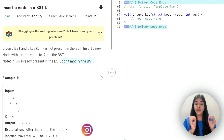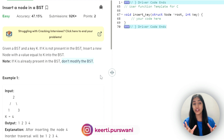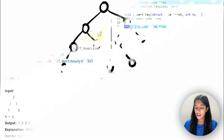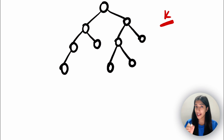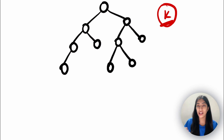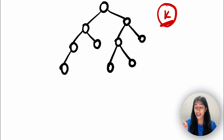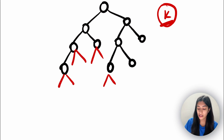In an interview, if you're given the question to insert a node in BST, these are the cases you should ask your interviewer: if K is already present in the BST, what should I do — should I throw an error code, or should I just return and not do anything? Now let's make the diagram and see how we make sure that inserting a node in BST preserves all the properties of BST. I'm going to make a statement: the new node that we're going to insert is always going to be a leaf node.